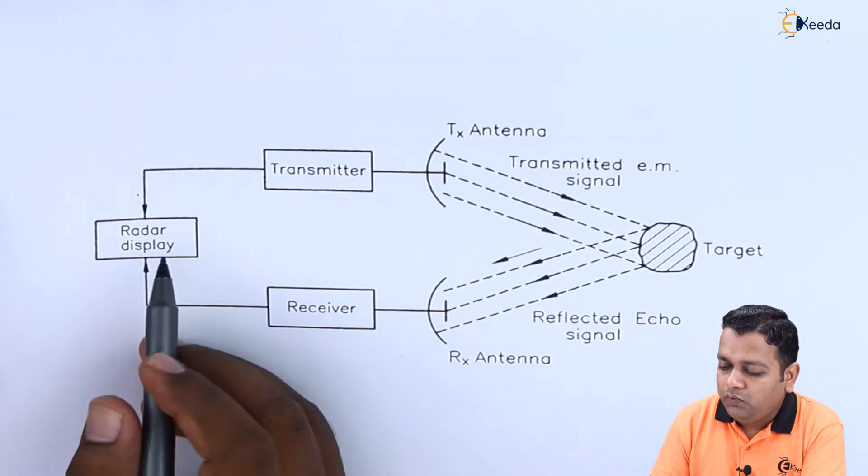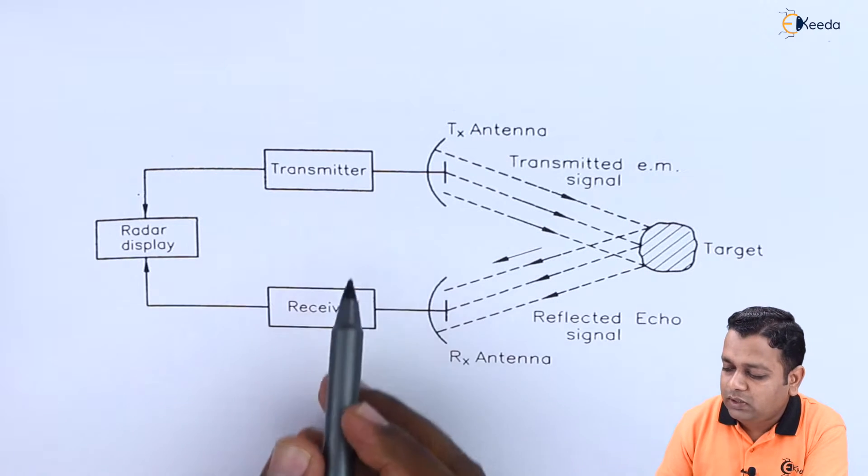Here is the block diagram. We have the radar display, transmitter, and receiver.